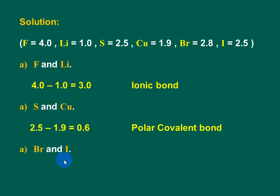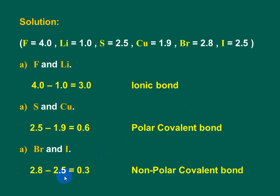Third, Bromine and Iodine. The electronegativity of Bromine is 2.8 and that of Iodine is 2.5. The difference equals 2.8 minus 2.5 equals 0.3. The type of bond is a non-polar covalent bond.